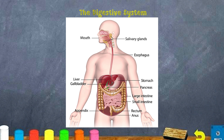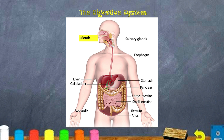Take a look at the image of the digestive system. The parts of the digestive system include: the mouth, salivary glands, esophagus, stomach, small intestine, large intestine, rectum, anus, liver, gallbladder, and appendix. These are the parts of the digestive system.